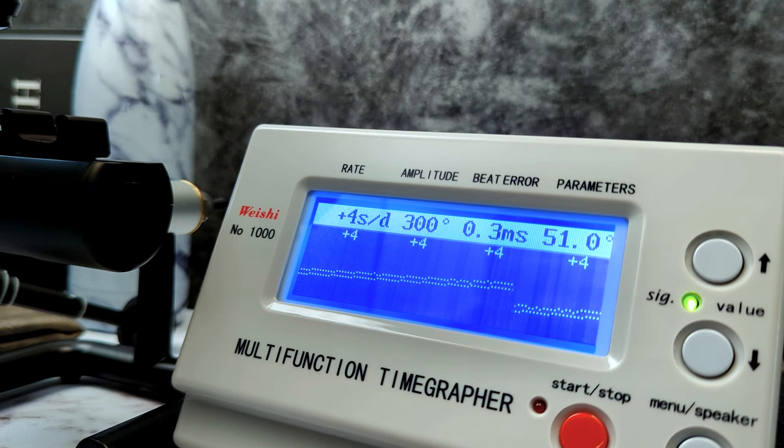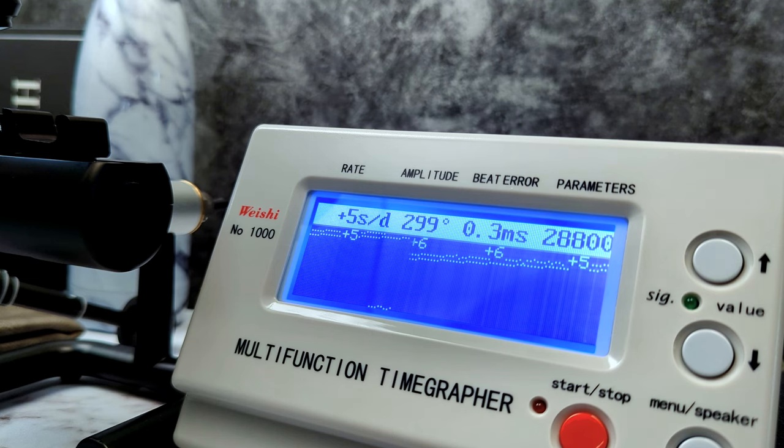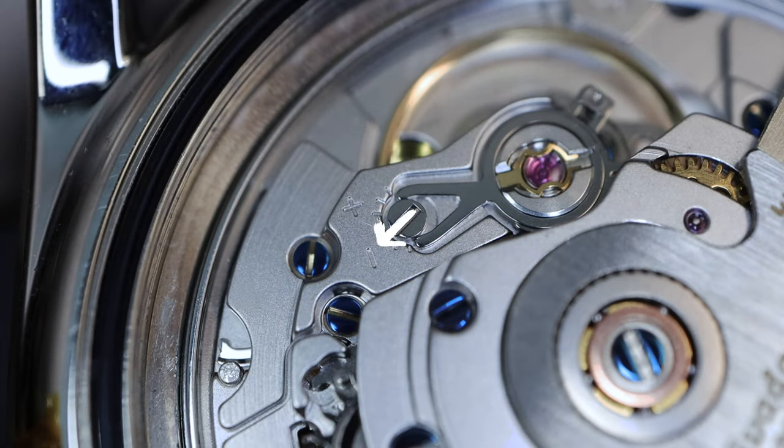So we have settled down to plus five, plus six. It's bouncing around there. That means one hash mark on the movement is roughly 10 seconds a day. So if your movement is running 10 seconds slow, move to the right one notch. But since we are at plus six, pretty stable, plus five, plus six, I think we are safe to leave it at that.